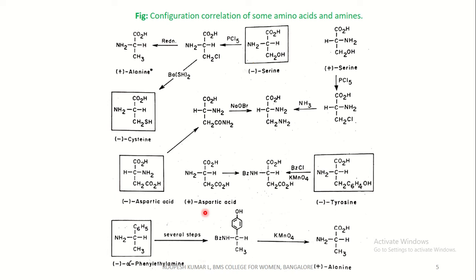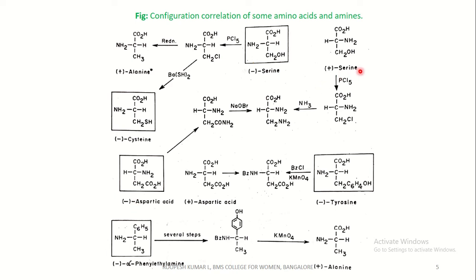Plus serine, which is dextrorotatory, on chlorination gives the corresponding chloro compound. This on aminolysis using ammonia gives the corresponding primary amine. Minus aspartic acid can be converted to the corresponding amine, which on reacting with sodium hypobromide gives the corresponding primary amine. Plus aspartic acid can be converted to protected aspartic acid, and tyrosine can also be converted to protected aspartic acid by reacting with benzoyl chloride and further reacting with KMnO₄.